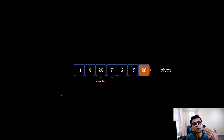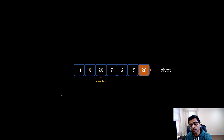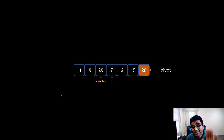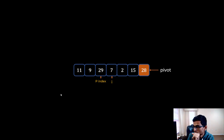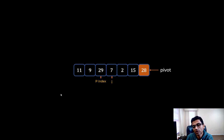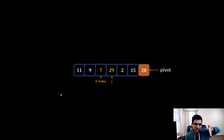Now we start another counter called I, which starts at P index. I keeps moving until it finds an element less than 11. 29 is not less than 11, so it moves. 7 is less than 11, so we stop. Now something interesting happens: we swap 29 and 7. When we do that, we are creating a left hand side which is less than 28 and a right hand side which is greater than 28.